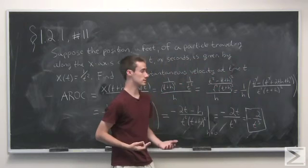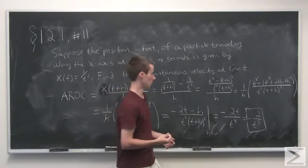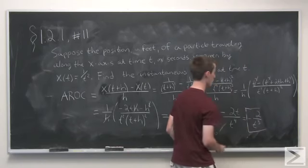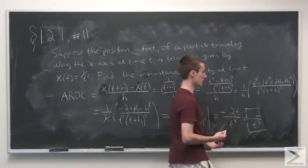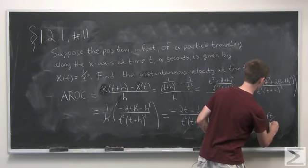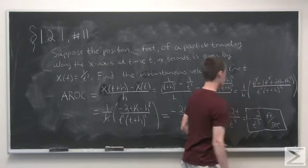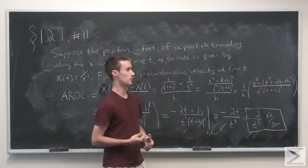And this is our final answer for the instantaneous velocity at time t. Of course, we should keep track of our units here. We were originally measuring in feet and seconds, so the velocity is going to be minus 2 over t cubed feet per second.